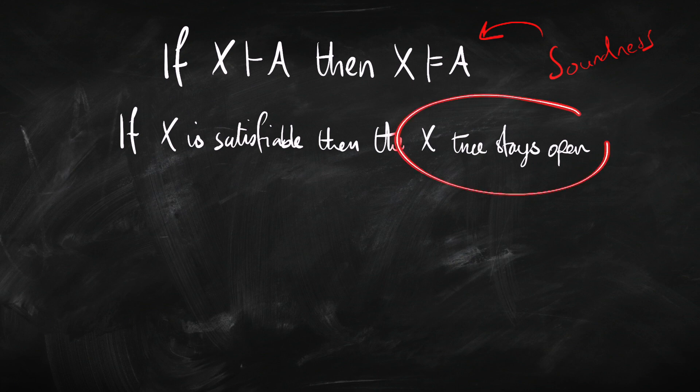So that's what we're going to try to prove today. We're going to try and prove: if you start a tree with a satisfiable set of sentences, that tree's not going to close. So how do we prove that a tree isn't going to close? How do we give ourselves a guarantee that the tree isn't going to close? Well, the key here is to think about what does it take for a tree to close. The only way a tree can close is if all the branches close.